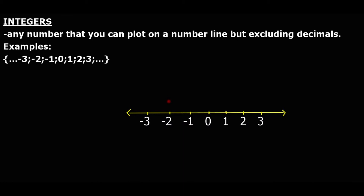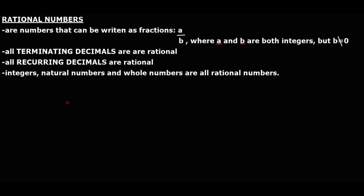Integers are any numbers that you can plot on a number line. On a number line, going right gives positives and going left gives negatives. Any number you can plot on a number line is an integer, but decimals like 1.5 or 2.6 are not integers. The symbol used for integers is Z.